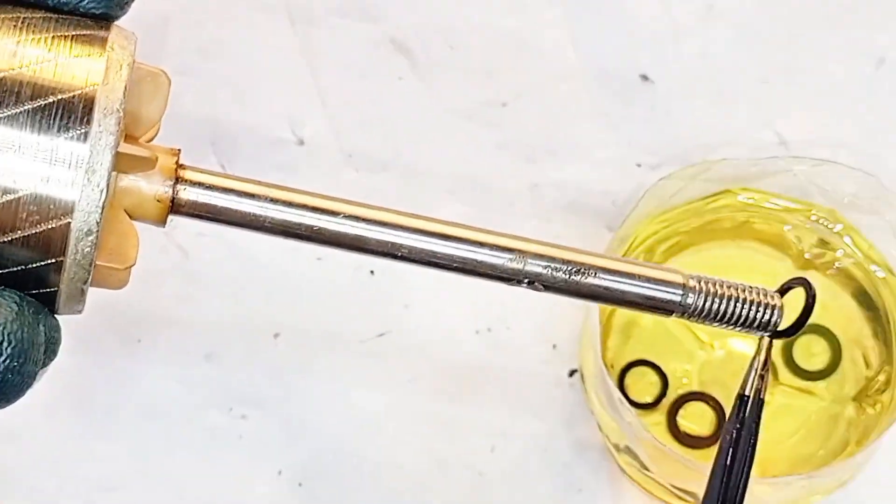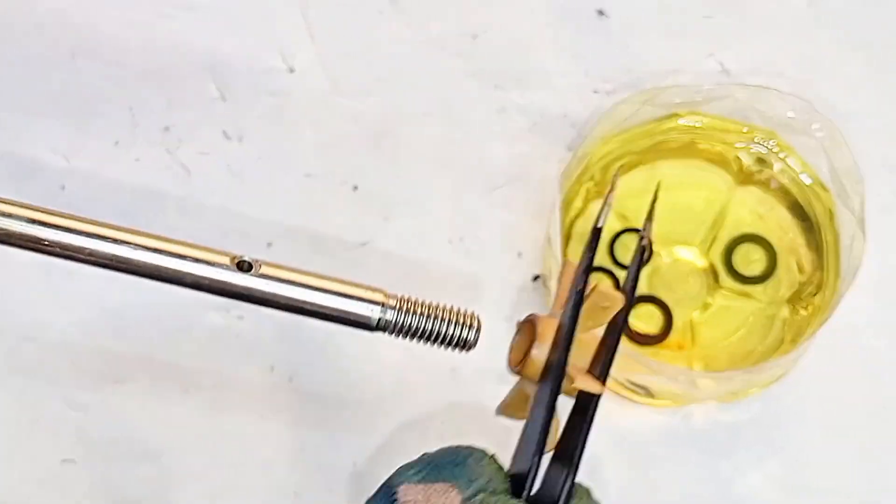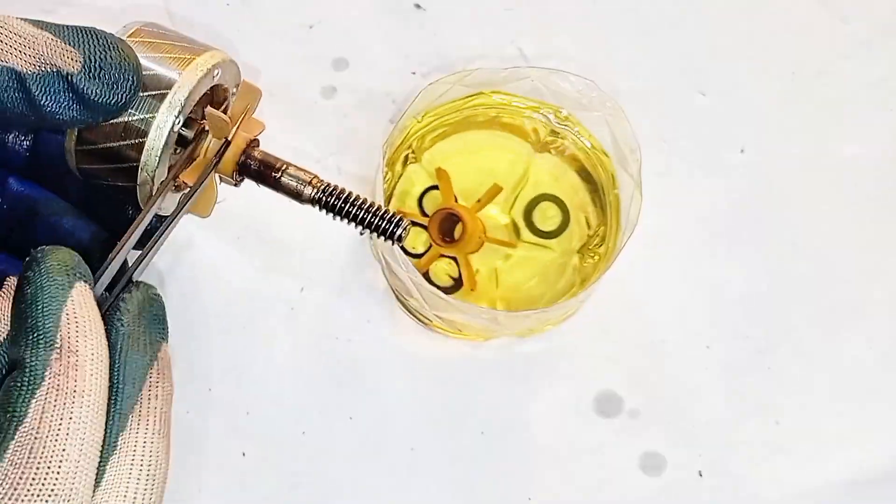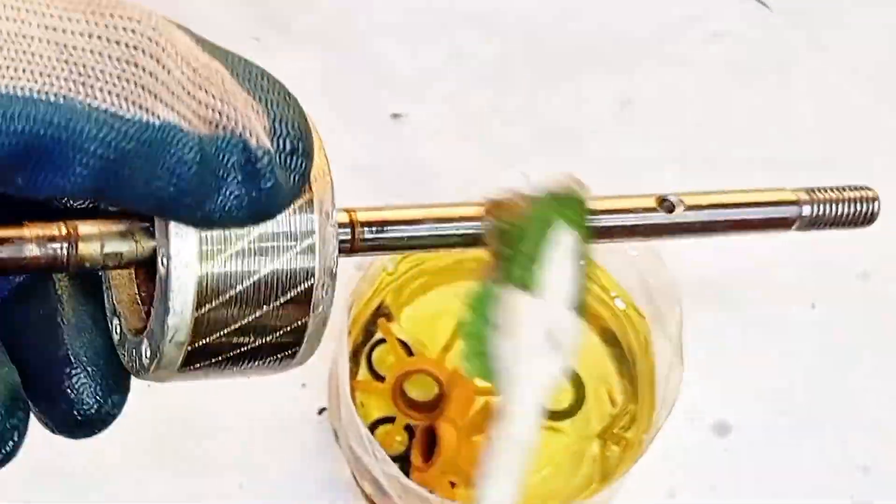Every small part matters: washers, cooling fans, even that thin film of grime hiding between layers. Into the petrol they go, soaking away years of dust and dirt. And just a touch on the shaft too—we're not letting grime slow us down.